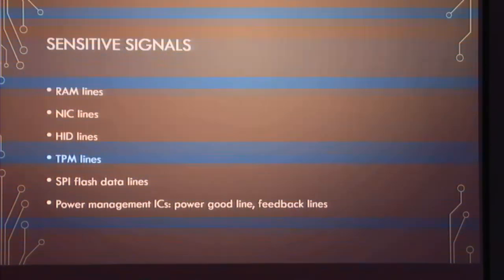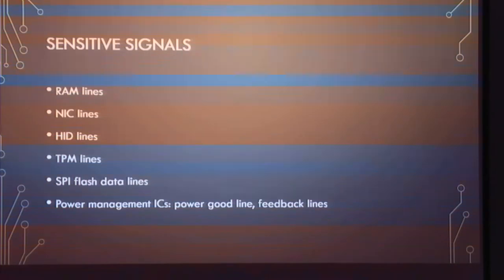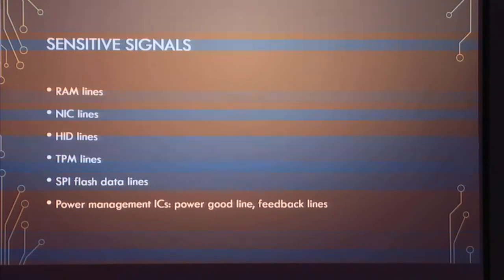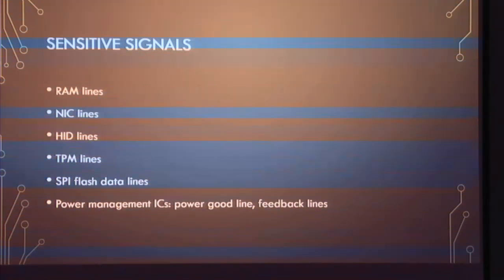SPI flash data lines are a sensitive signal because they hold things like BIOS code — as your system boots, it reads the BIOS off SPI flash into memory and executes it. That code is exceedingly valuable. Power management ICs are also worth mentioning: they have a line declaring whether power is good, react to current demand changes, and exhibit active regulation with a feedback loop. They're a fairly good place to look for side channels since they're often isolated to a particular sub-module on a mainboard.